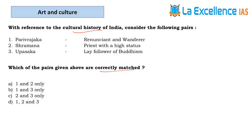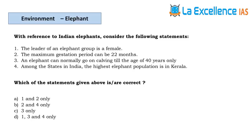The next question is about cultural history — correctly match the terms. Parivrajaka means a wanderer or a person of wandering supreme soul — correct. Shramana is described as a priest with higher status — wrong; Shramana is a wandering monk, not a priest. When statement 2 is wrong, answer is B.